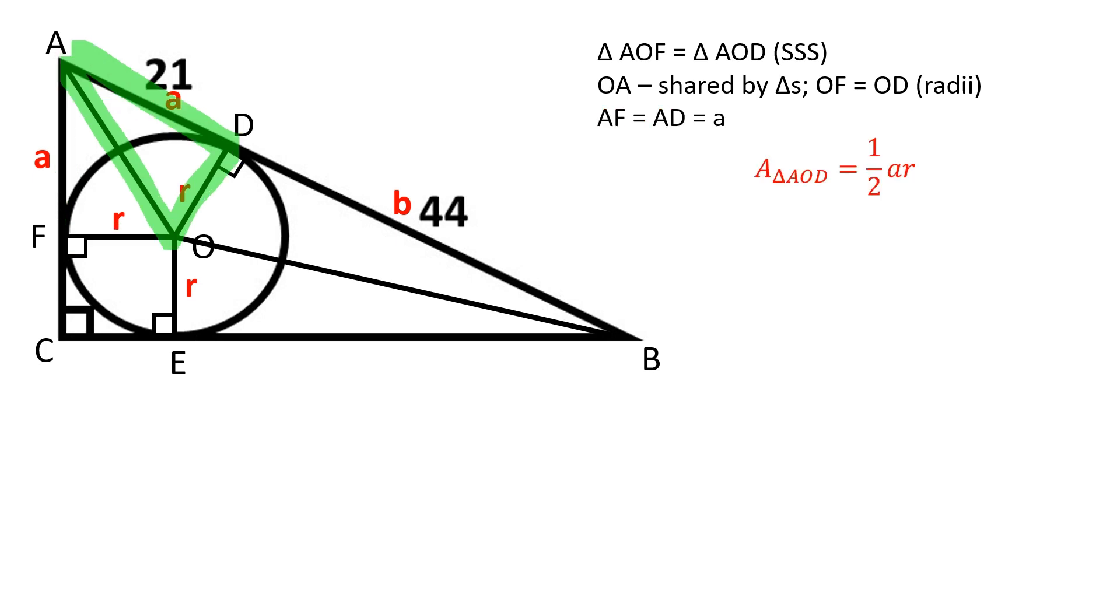AOD is a right triangle. The area of a right triangle is equal to half the product of its legs. Therefore, the area of the quadrilateral ADOF is equal to the product of A and R.